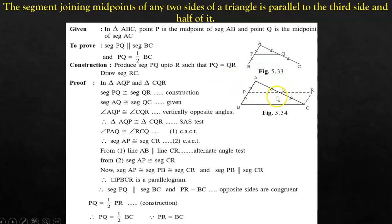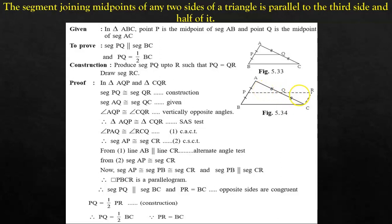In triangle AQP and triangle CQR: PQ is congruent to QR by construction, and AQ is congruent to QC, which is given information. Angle AQP is congruent to angle CQR because these are vertically opposite angles. Therefore, triangle AQP is congruent to triangle CQR by the SAS test of congruency. On the basis of this, angle PAQ is congruent to angle RCQ — corresponding angles of congruent triangles — and segment AP is congruent to segment CR — corresponding sides of congruent triangles.